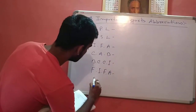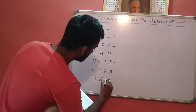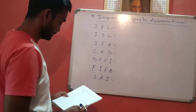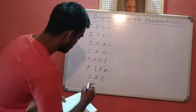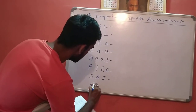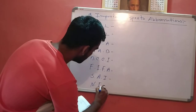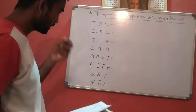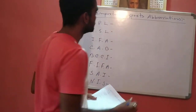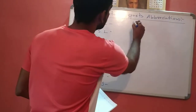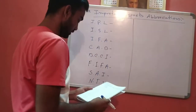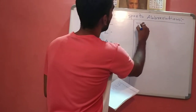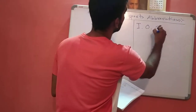Then SAI. Then the next one is NIS. What is the name? Then IOC.